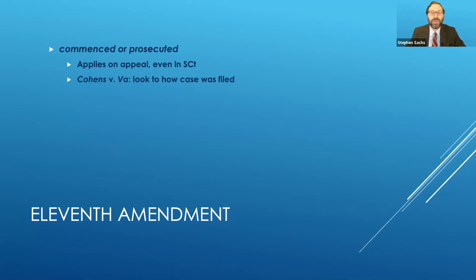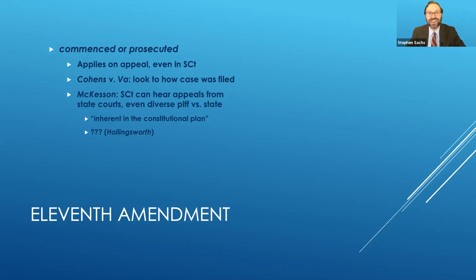But somebody like Mr. Hyatt suing the state of California, that's not okay. And the Supreme Court can't hear it. There was a case called McKesson, not too long ago, in which the Supreme Court announced, yes, we can hear appeals from state courts, even if they were originally filed as a diverse plaintiff against the state. And that's because our jurisdiction was inherent in the constitutional plan. We agree with Justice Souter in dissent, who said that that makes no sense. Indeed, the constitutional plan is whatever the constitution says it is. If the constitution says no jurisdiction, then they can't have any jurisdiction here.